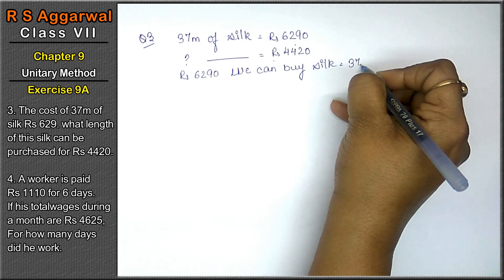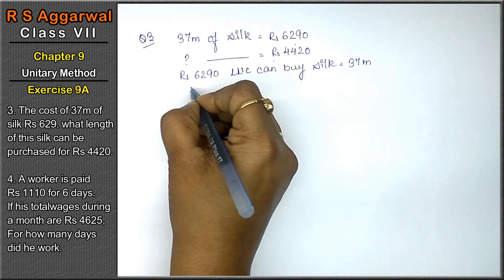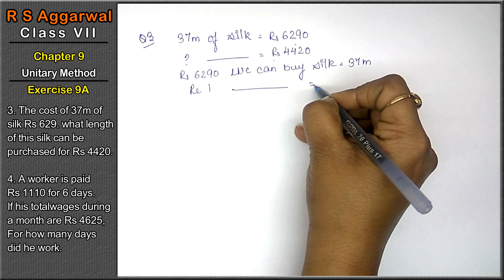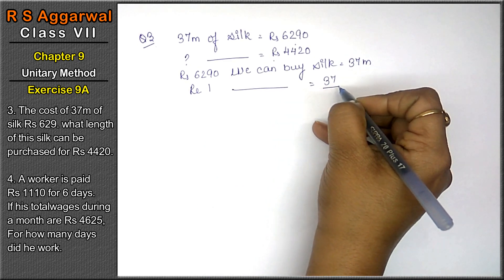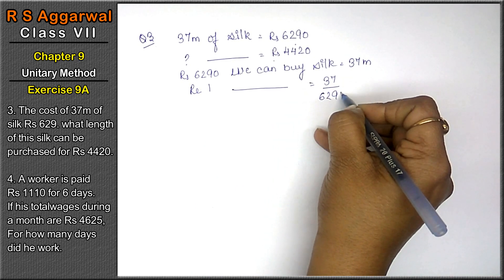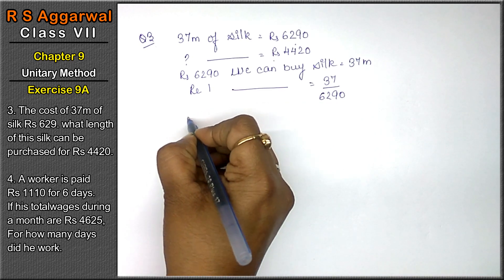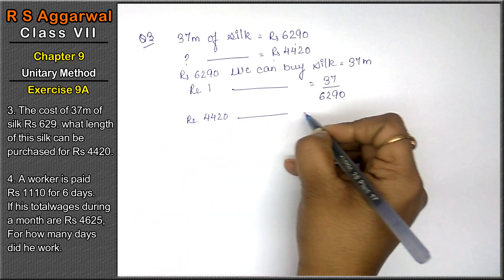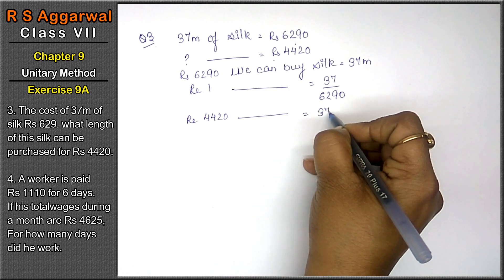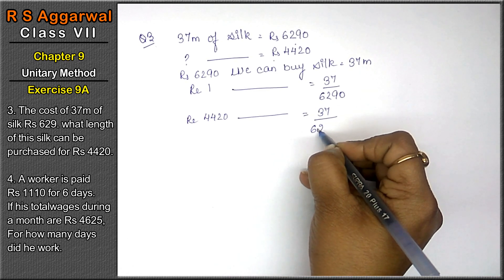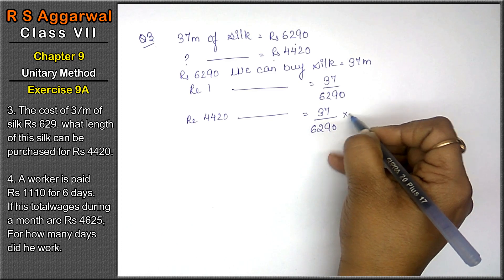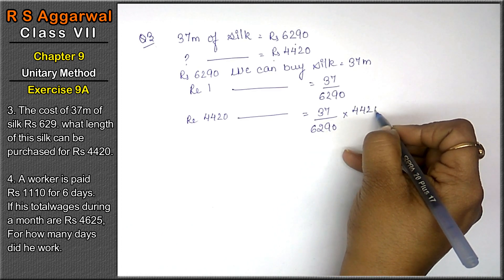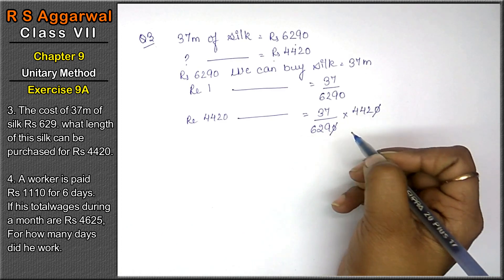Rupee 1 में कितनी buy कर सकते हैं silk? 37 upon 26290 meter. Now rupee 4420 में how much can we buy? 37 upon 26290 into 4420. Now 00 will get cancelled.